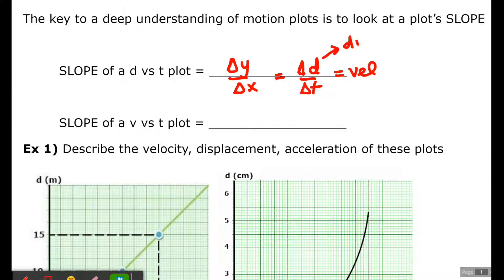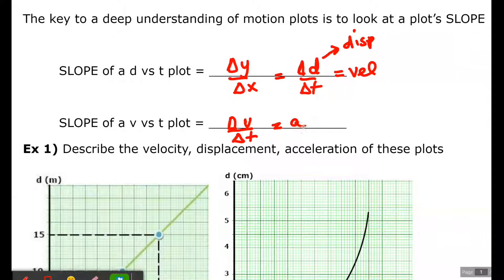Displacement is the distance and direction from start to finish. The slope of a V versus T plot is delta V over delta T, which is acceleration. So if you want to know about the acceleration from a V versus T plot, look at the slope. If the slope is constant, the acceleration is constant. If the slope is positive, then that object had a positive acceleration.